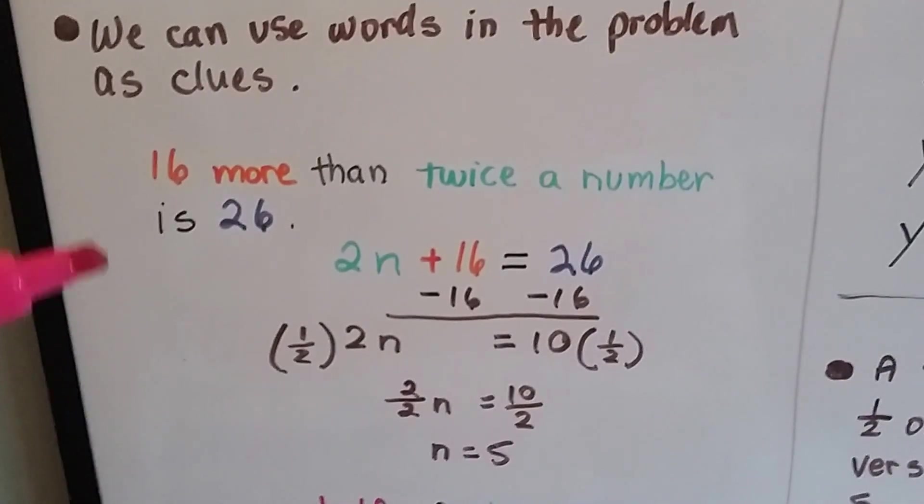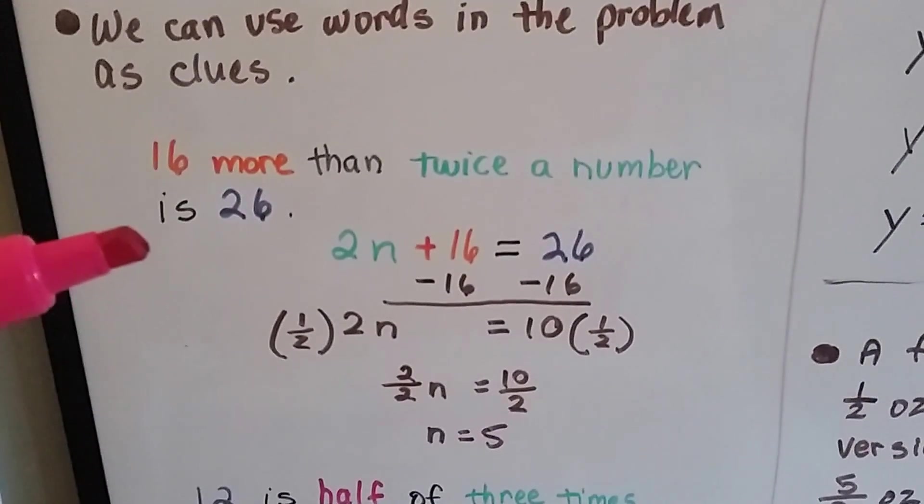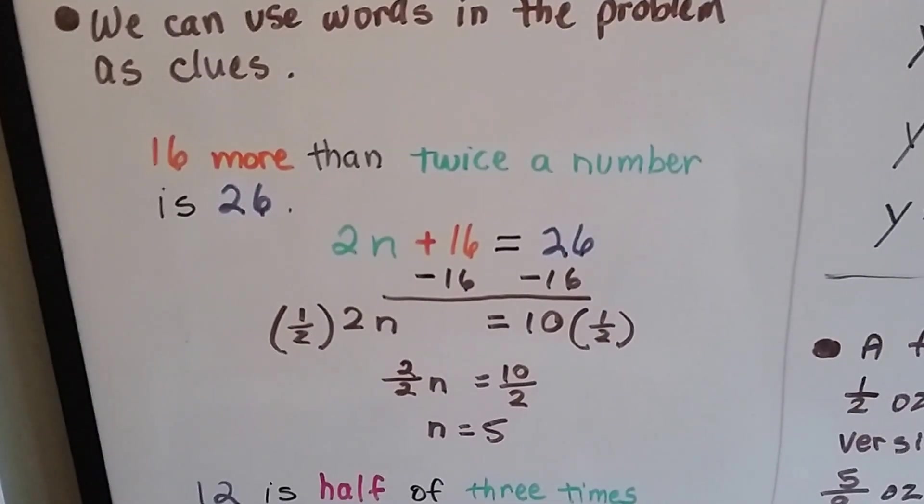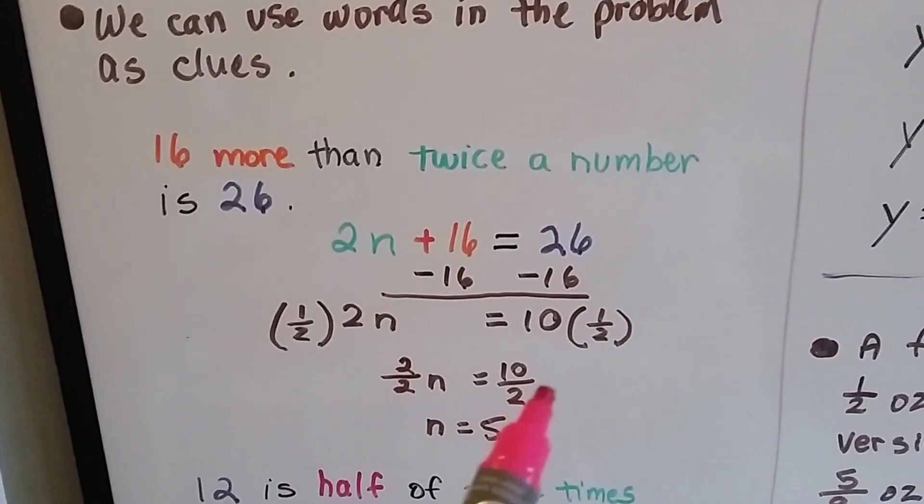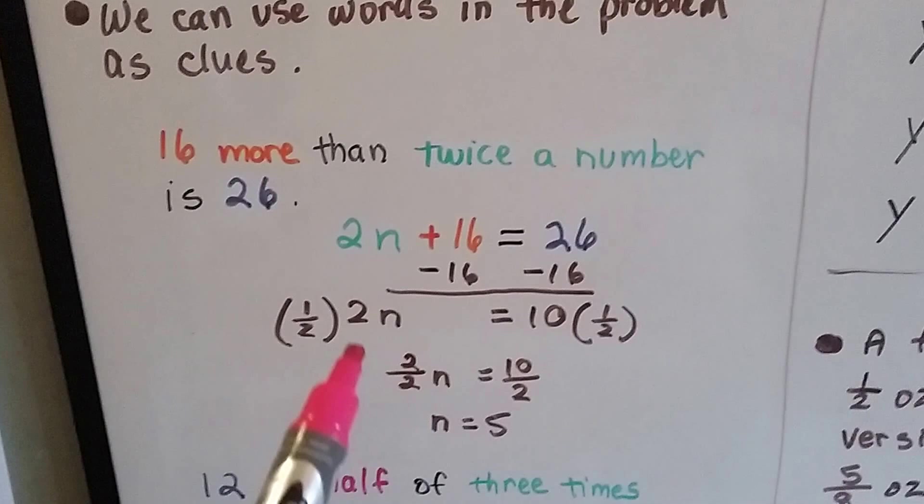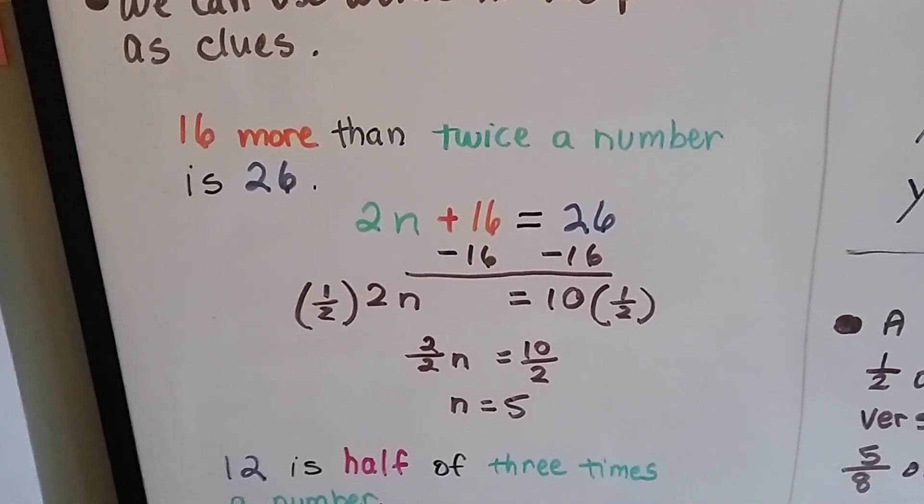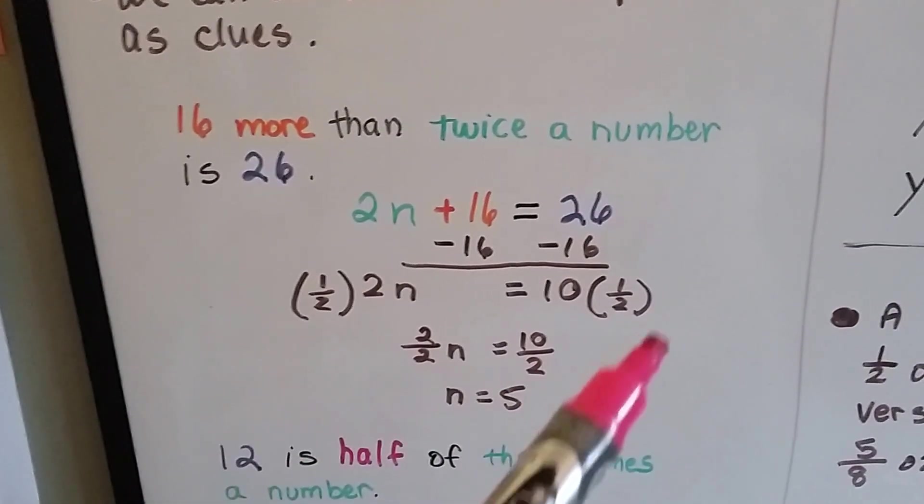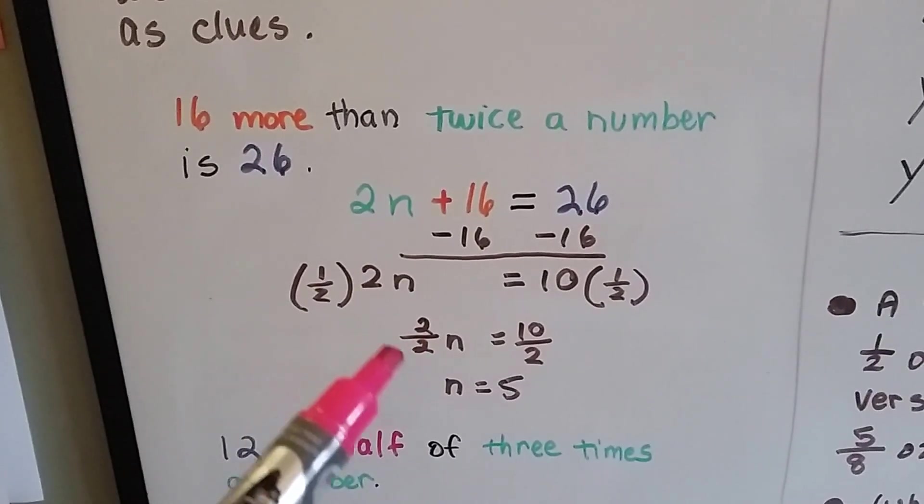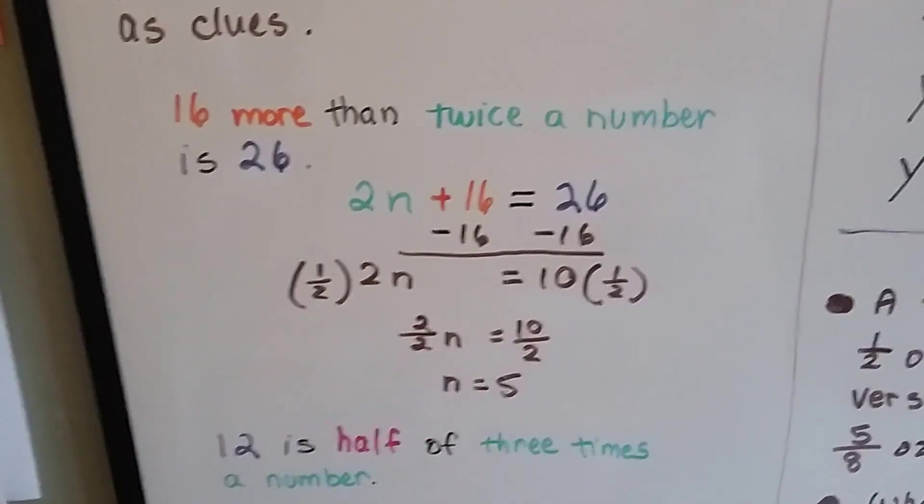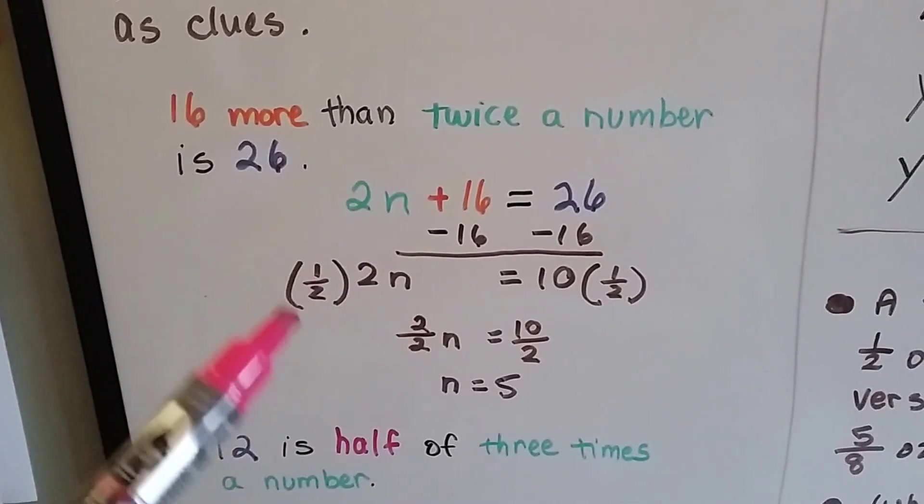As we learned in the last video, we can use the addition property of equality to help us isolate the n. We can take 16 away from each side, create a zero pair here, take 16 away from the 26, and we end up with 2n equals 10. We can use the multiplication property of equality and multiply each side by the reciprocal of this 2. We get 2 over 2, and when we simplify it, we find out that n is 5. So, the number that it's twice of is 5.